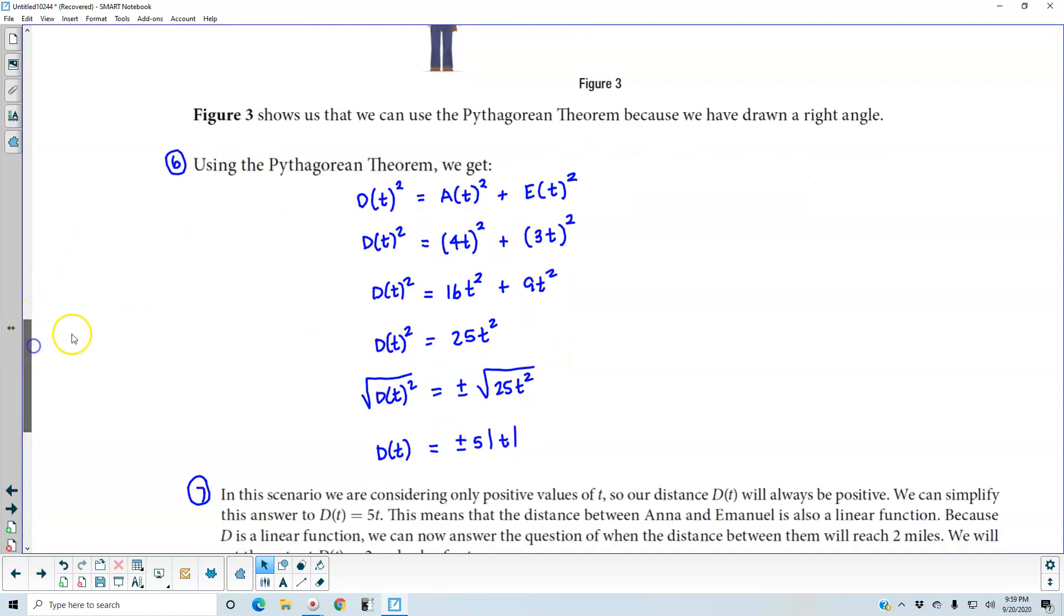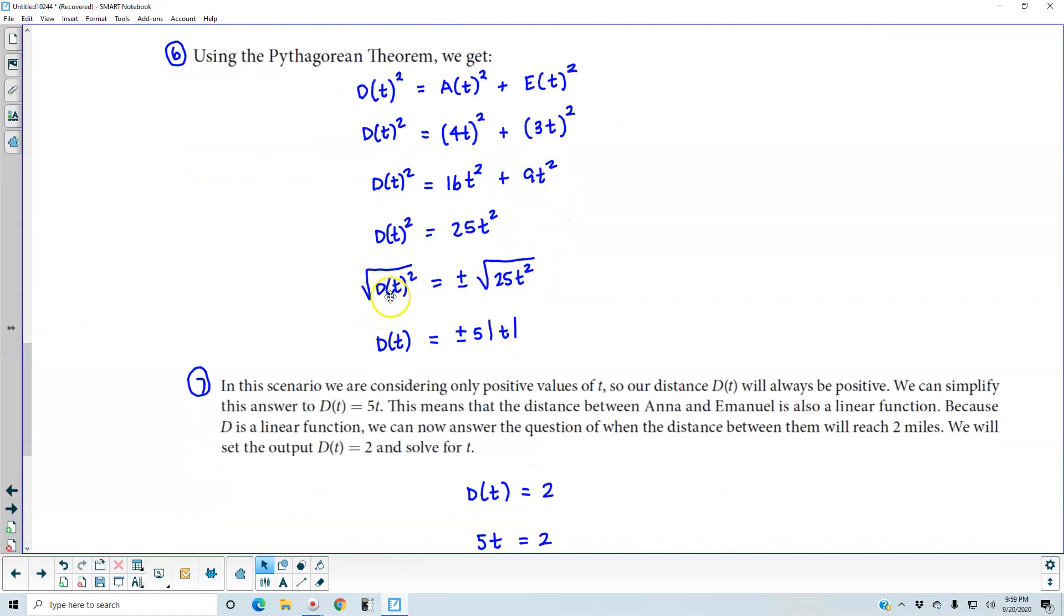So now what we're going to do is combine like terms on the right side to get 25t squared. So now what we want to do is solve by taking the square root of both sides by using the square root property. So the square root of D(t) squared is D(t). It's equal to plus or minus the square root of 25t squared, which is plus or minus 5 times the absolute value of t.